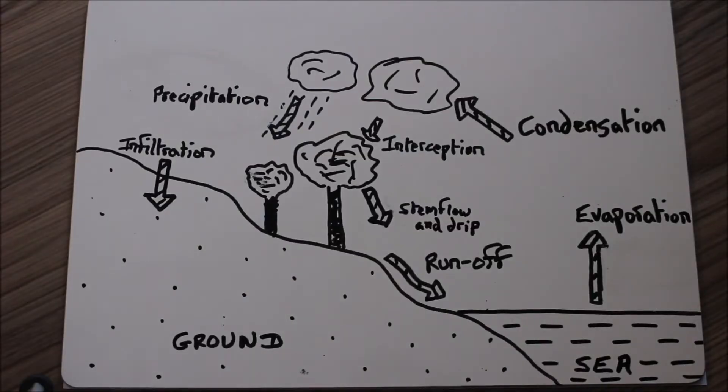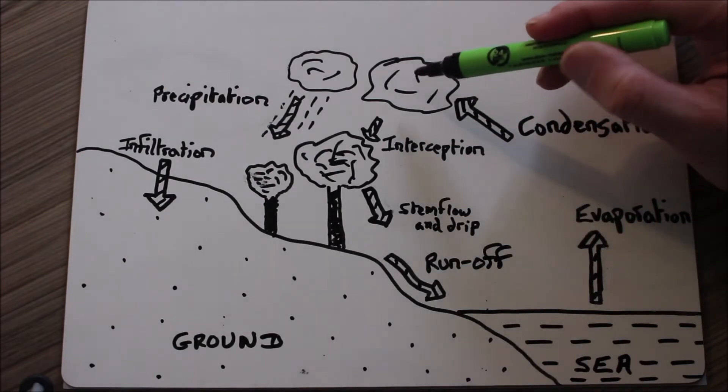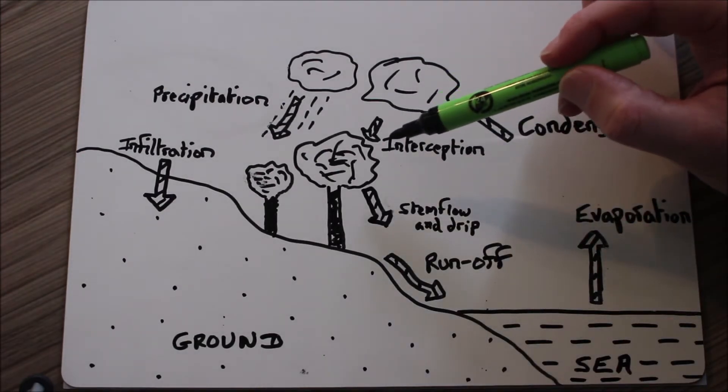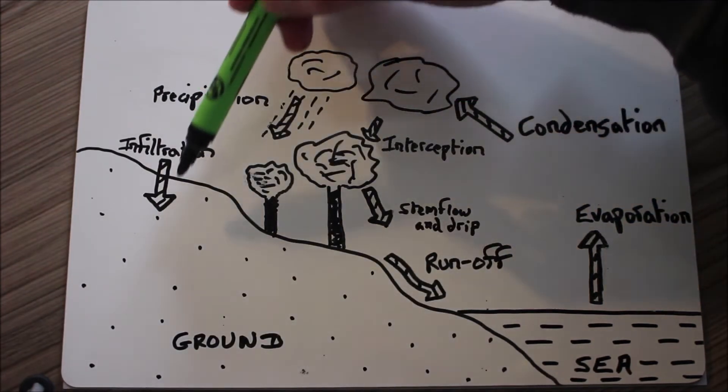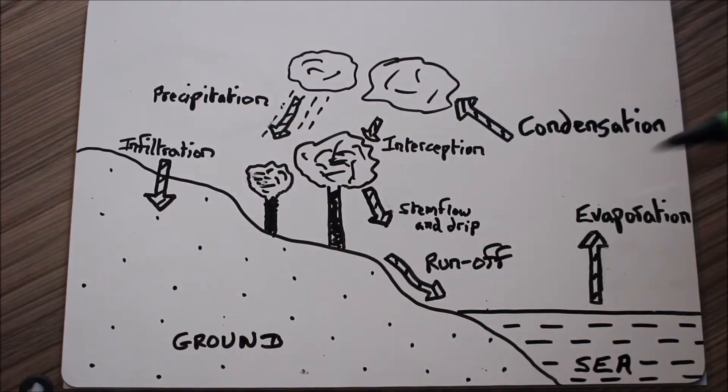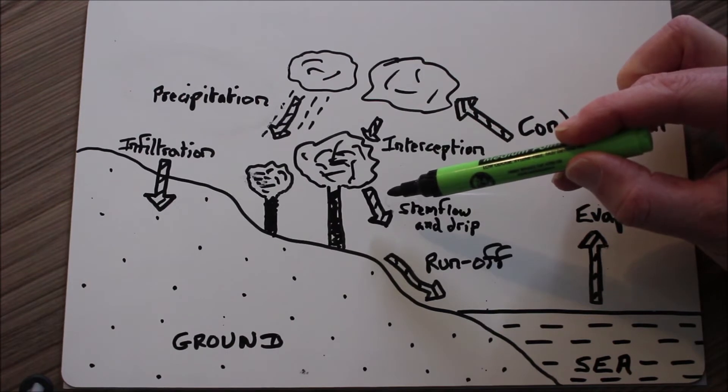Okay, so let's add three new processes on. Interception is where rain from a cloud hits a tree or hits a bush. Infiltration is where water soaks into the ground. And stem flow and drip is where water drips off bushes, trees and vegetation.